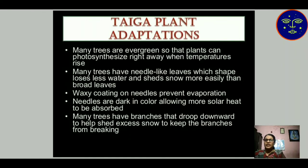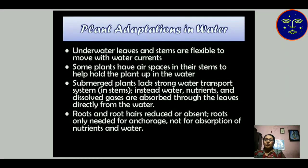Taiga plant adaptation: many trees are evergreen, meaning greenery is seen all the time, so those plants can photosynthesize right away when temperatures rise. Many trees have needle-like leaves which lose less water and shed snow. A waxy coating on the needles prevents evaporation of water. Needles are dark in color to absorb more solar heat. Many taiga trees have branches that droop downward to help shed excess snow and keep branches from breaking.